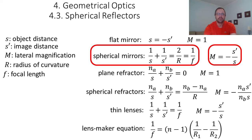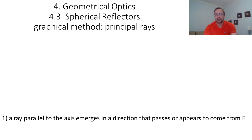In the rest of this video, I will introduce another method to find the location of images with spherical reflectors. Instead of using the formula, you can use a method called the graphical method, which consists of drawing a few principal rays to identify the location of the image.